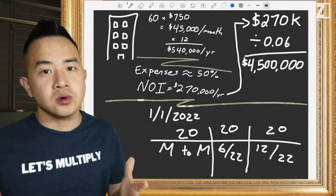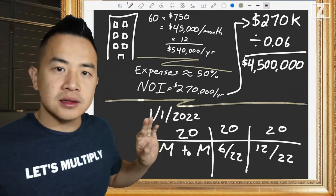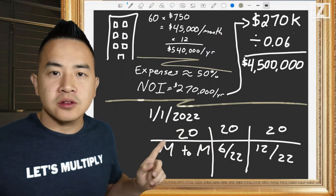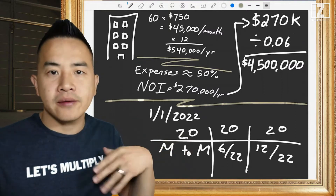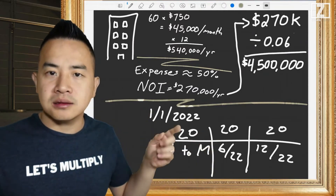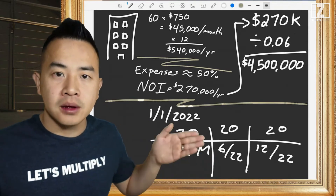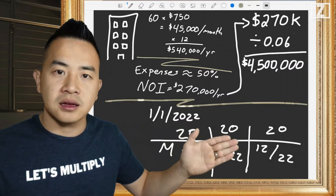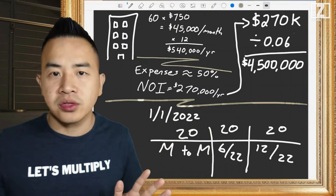Congratulations — it's January 1st, 2022 and you just bought this 60-unit apartment building. What do we do next? Let's analyze the current tenants. The 60 tenants are broken into three groups of 20. The first group is month-to-month — their lease is expired and they're just rolling month-to-month. The second group signed a lease back in June 2021, so their lease runs through mid-2022. The third group just signed right before you bought the building, so they have a full 12-month lease in place.